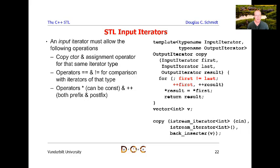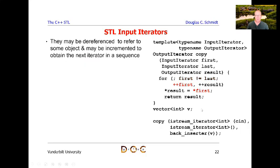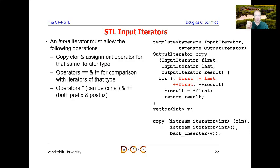To summarize: input iterators can have a copy constructor and an assignment operator that work on the same iterator type. They can also have comparison operations like == and != for input iterators. You can also have dereference operations — the star and ++. Notice that the star operation can only occur on the right-hand side; you can't put star first on the left-hand side — it's only what's called an R value.